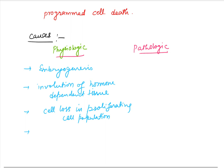Another situation involves potentially harmful self-reactive lymphocytes — these are destroyed by the process of apoptosis. If this does not happen, these reactive lymphocytes will start destroying our own tissues, resulting in an autoimmune response. So it is very important that self-reactive lymphocytes are eliminated after they have completed their maturation.